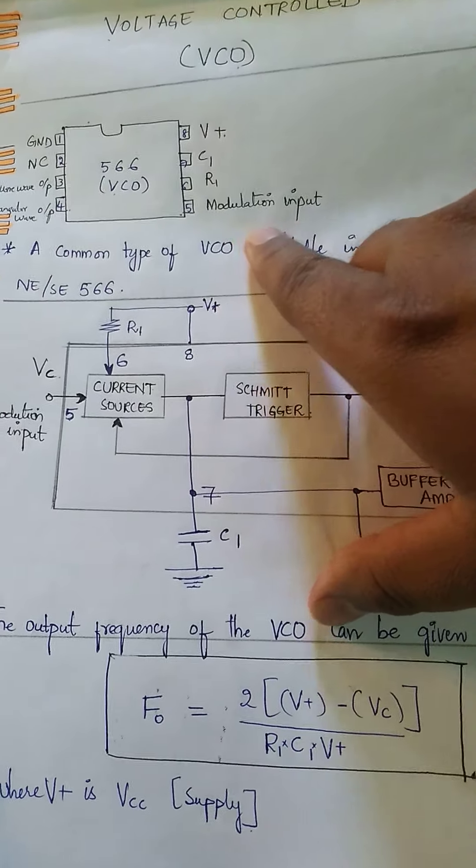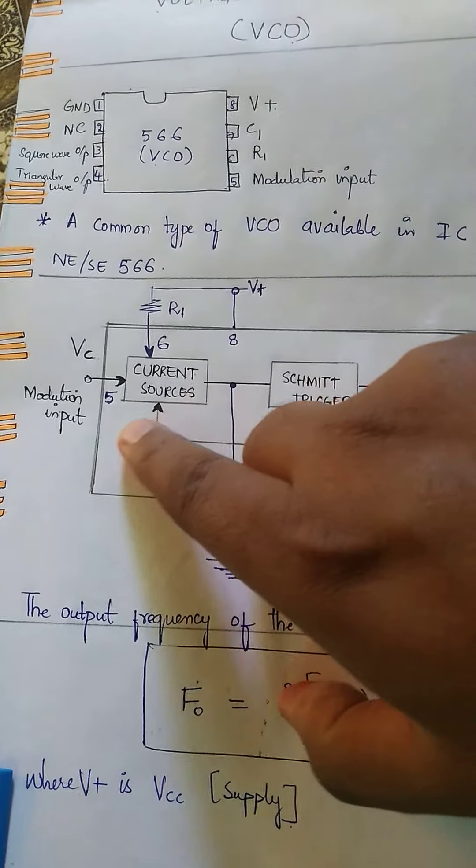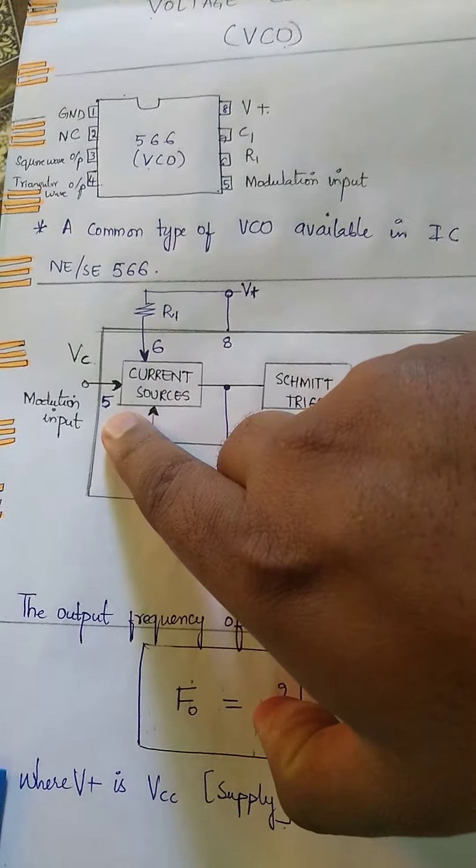Good afternoon everyone. This is Syed Fasyodian from ISL Engineering College, EC department. Today I am going to explain about Pulse and Linear Integrated Circuits, specifically the Voltage Controlled Oscillator — in short, VCO — which we use in the phase lock loop. We will cover what VCO means, why we use it in PLL, its pin description, and its block diagram.